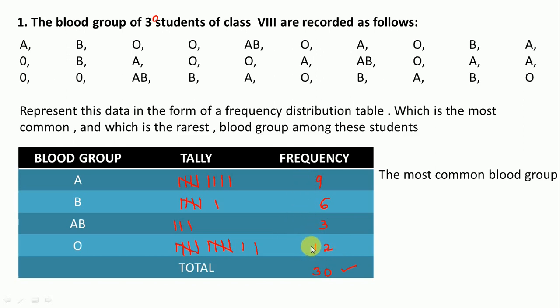So here 12 is there, so this one is O. So common blood group is O. Next is the rarest blood group, whose frequency is less or low.